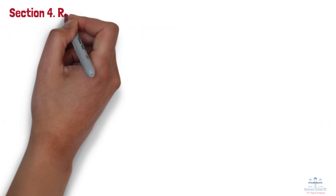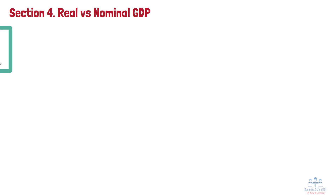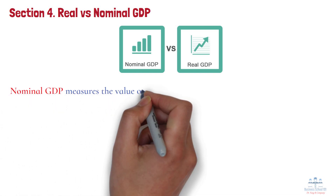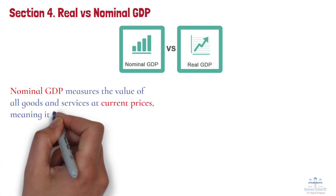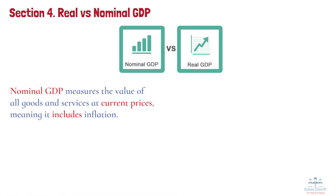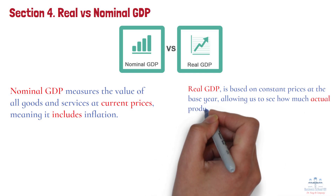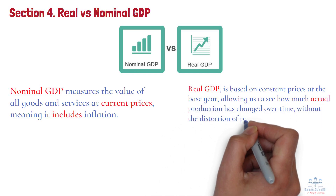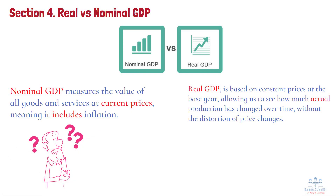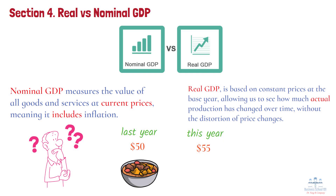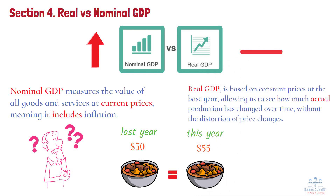Section 4: Real versus nominal GDP. There are two types of GDP that economists often discuss: nominal GDP and real GDP. Nominal GDP measures the value of all goods and services at current prices, meaning it includes inflation. Real GDP, on the other hand, adjusts for inflation — it's based on constant prices at the base year, allowing us to see how much actual production has changed over time without the distortion of price changes. For example, if you spent $50 on groceries last year and $55 this year, and prices went up by 10%, you're not actually buying more groceries — you're just paying more for the same items. Nominal GDP would show an increase, but real GDP would adjust this to reflect the actual quantity produced.